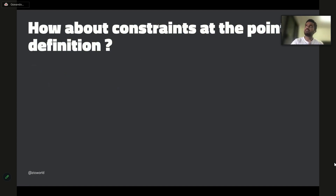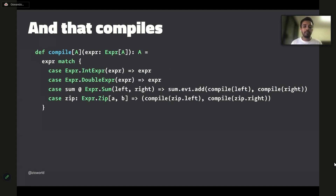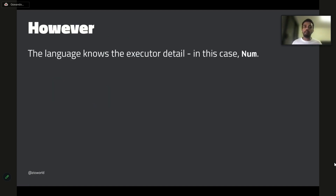So how about constraints at the point of definition? We tried using the type class instance at the point of execution and that didn't work nicely. So let's propagate the type class instance at the point of definition of the abstraction. That simply means: at the Sum node, I ensure there is evidence of the Num type class, so you can use this Sum node for adding two expressions given that A has an instance of Num. And that actually works — you can use that evidence by calling sum.evidence.add(compileLeft, compileRight). Everything is good.